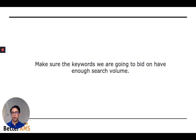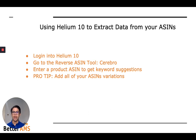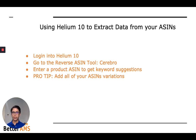We want to make sure the keywords have enough search volume because you're going to bid on them, you're going to invest in them, and you want to get a return. You don't want to put keywords in a campaign and not get any impressions or any ad spend at all. So using Helium 10, we're going to extract data from your ASINs. You're going to pick one of your ASINs, log in to Helium10.com, go to the reverse ASIN tool Cerebro, enter a product ASIN where we will get back keyword suggestions, and we will create campaigns.